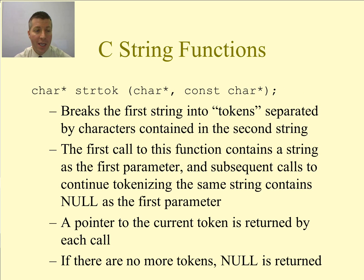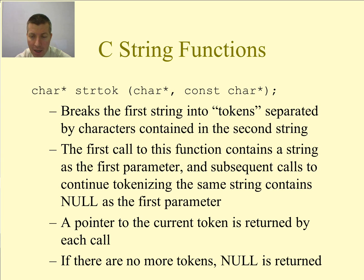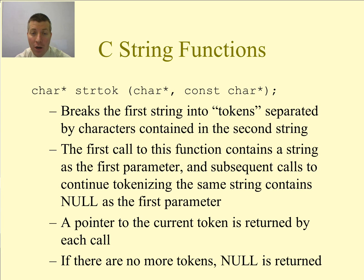The last function, which we're going to use in our program today, is strtok. This is how we can tokenize a string — we break the first string into tokens separated by characters contained in the second string. The first string can be changed; the second parameter is const. The first call passes the string as the first parameter. Subsequent calls to continue tokenizing the same string pass null as the first parameter. A pointer to the current token is returned from each call, and null is returned when there are no more tokens.